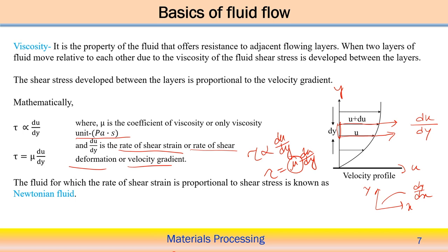The fluid for which the rate of shear strain is proportional to the shear stress is known as a Newtonian fluid. When we link shear stress and velocity gradient du/dy, it might have a linear or non-linear relationship. When this linear relationship exists — as expressed in tau = mu * du/dy — the behavior is called Newtonian fluid. When a non-linear relationship exists, it is called a non-Newtonian fluid.